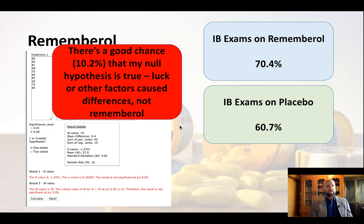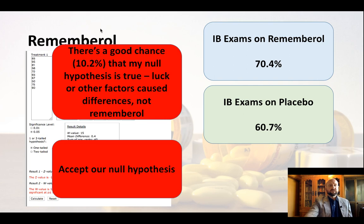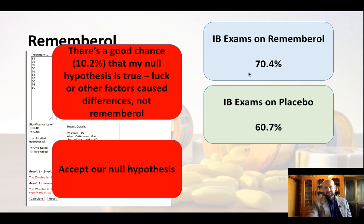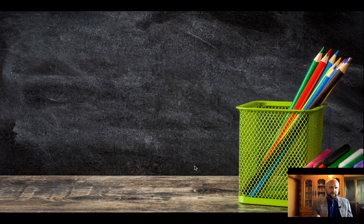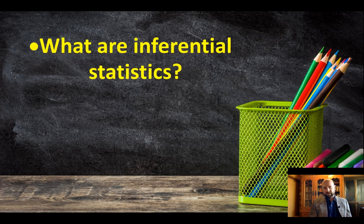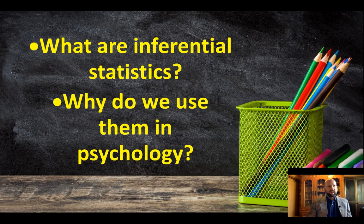So that's what inferential statistics are — we calculate these tests to see what's the likelihood that my null hypothesis is true, even though on the surface I've got differences in my conditions. Because I'm at a 10.2% chance, which is higher than 5%, I have to accept the null hypothesis and reject my research hypothesis. I hope that clarifies things. Inferential statistics are statistical tests we apply to data to test their significance, and we use them because we need to see that our results are reliable and valid, and to assess the extent to which we can reject the null hypothesis — that the differences observed are actually due to manipulation of the independent variable.